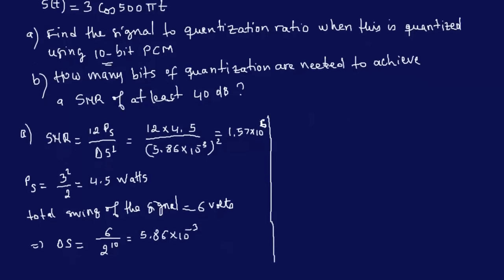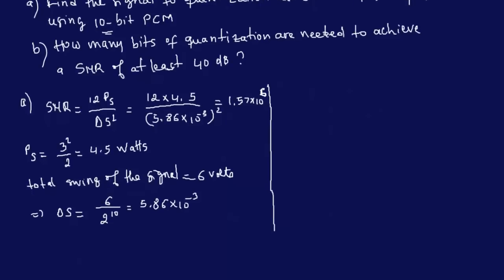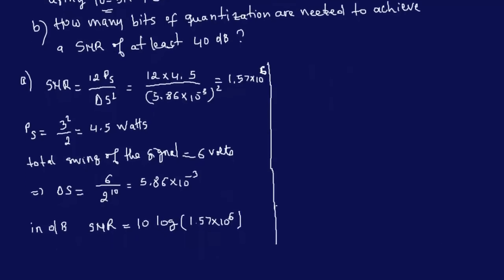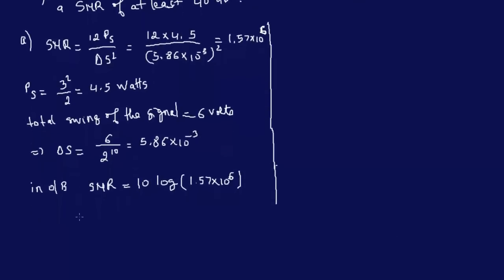Now we have to convert this in dB, and the formula for that is you have to multiply 10 times and take the log of that. So SNR is 10 log of the value that we have over there, 1.57 times 10 to the power 6. And that gives us 62 dB, decibels.